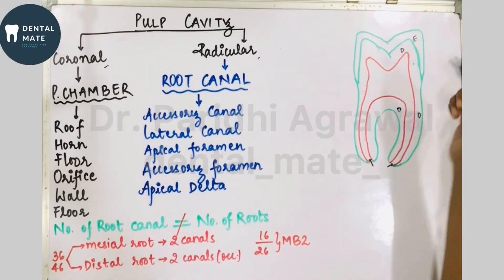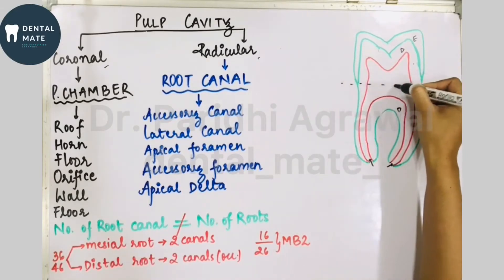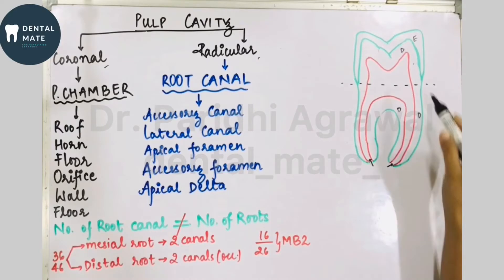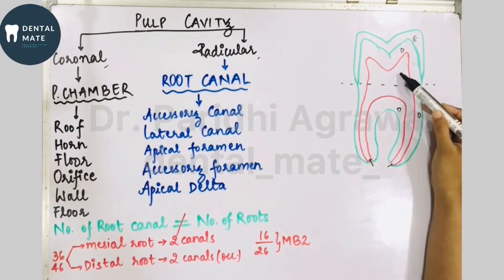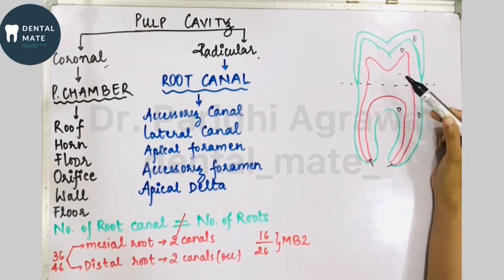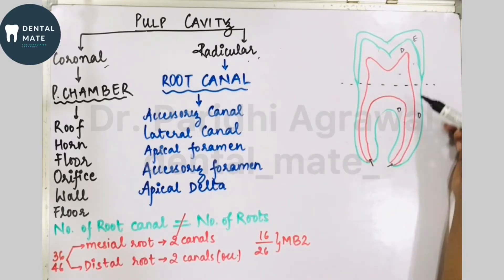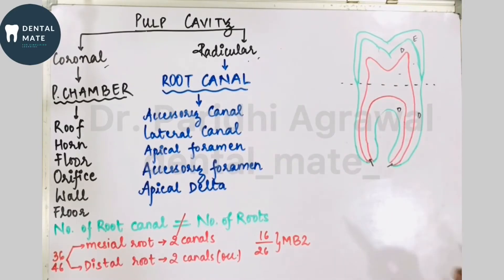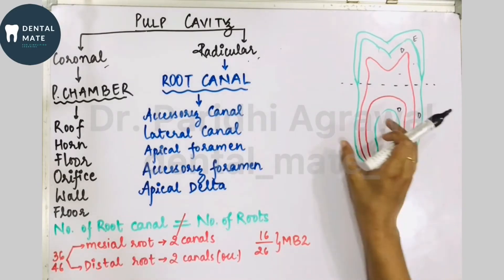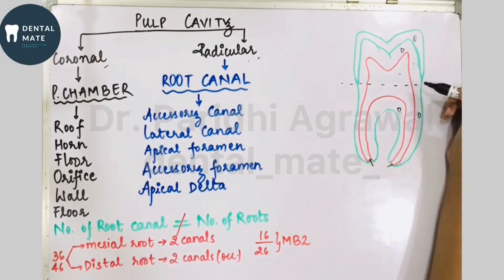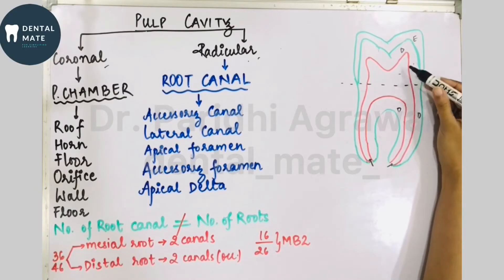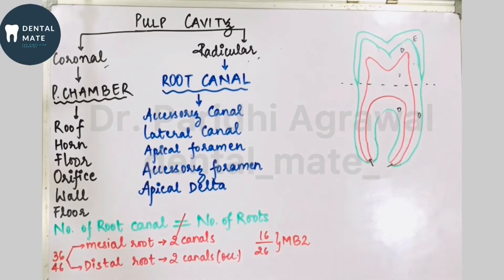The coronal part — that is, the part of the pulp cavity present in the crown — is known as the pulp chamber. The part present in the roots of the tooth is known as the root canal. So the radicular portion is the root canal, and the coronal portion is the pulp chamber.